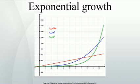Biology examples: The number of microorganisms in a culture will increase exponentially until an essential nutrient is exhausted. Typically the first organism splits into two daughter organisms, who then each split to form 4, who split to form 8, and so on. A virus — for example SARS or smallpox — will typically spread exponentially at first if no artificial immunization is available. Each infected person can infect multiple new people.